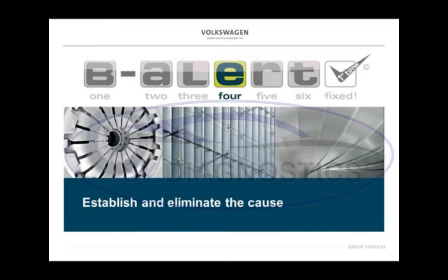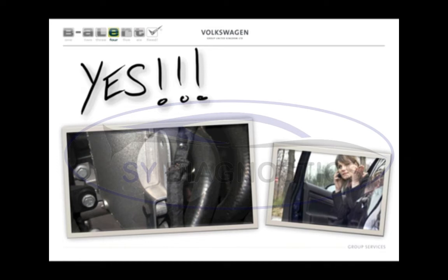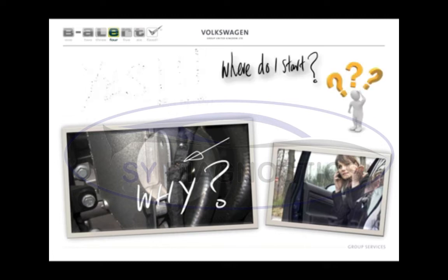In this short video I'm going to take you through some tips on establishing and eliminating the cause — the fourth step of the B-ALERT process. Fantastic — you've found it! With good questioning, careful analysis, and a little forward planning, you've gone straight to the fault: a very small piece of damaged wiring hidden away in the engine bay. That's really satisfying — so great, we can repair it and get it back to the customer, right? Definitely not. This is exactly why we get repeat repairs. Unless we identify why this happened and why it chafed through, it's very likely they're going to break down again.